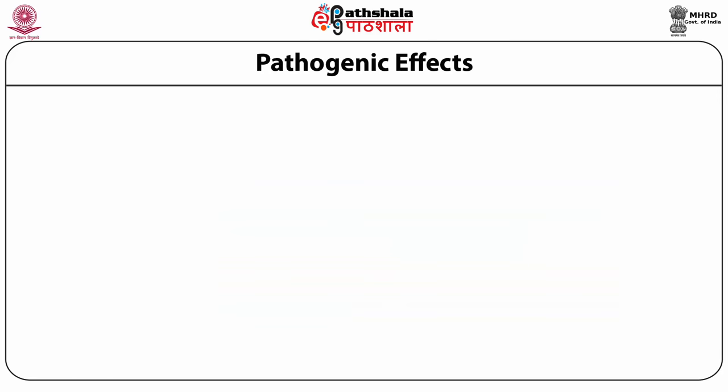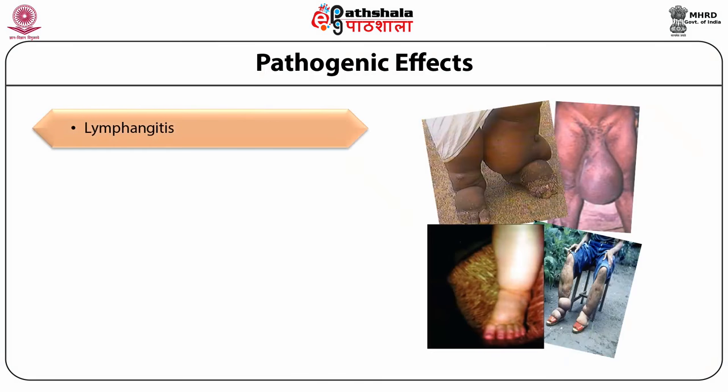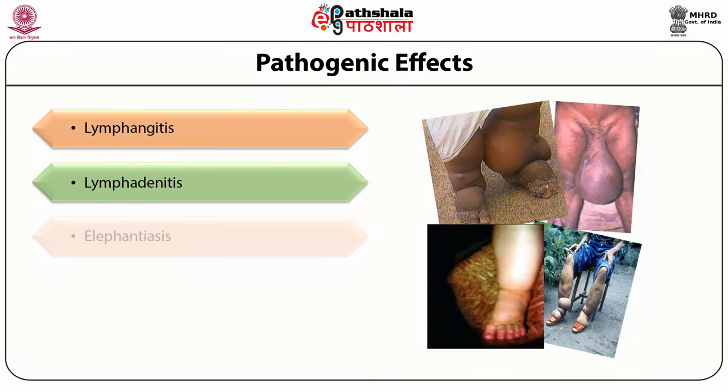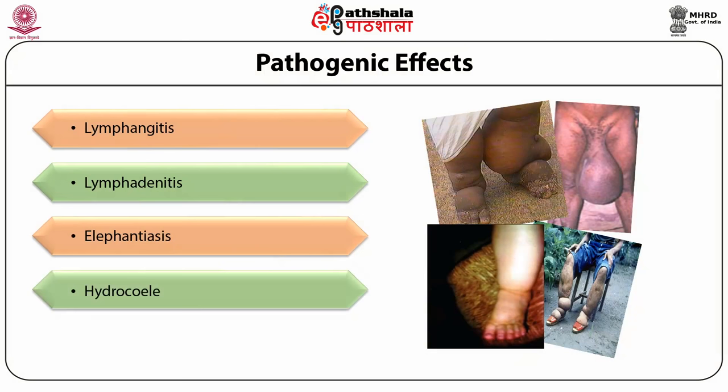Depending upon the severity and the level of infection, Wuchereria bancrofti can cause variable pathogenic effects. These are primarily of five types: lymphangitis, lymphadenitis, elephantiasis, hydrocele, and chyluria. Let us study about each of these diseases in detail.